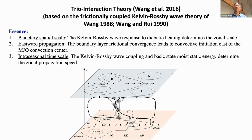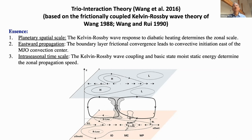The TRIO interaction theory represents the interaction between boundary layer moisture convergence, convection, and Rossby-Kelvin wave circulation — that's the three-part interaction. In the boundary layer, when you have easterly wind, the Coriolis force creates convergence, which pushes moisture upward and generates new convection to the east. This is exactly why the MJO moves eastward. The planetary scale and intraseasonal timescale of the MJO are determined by how the Kelvin-Rossby wave responds and interacts with diabatic heating and the background moisture structure.